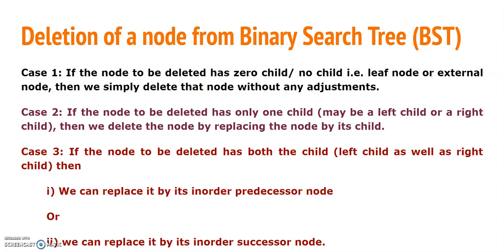We will see how to get the inorder predecessor and how to get the inorder successor. When you arrange the data in ascending order, to find the inorder successor you just take the immediate next element of that particular element. And if you want to find the inorder predecessor node, it is the immediate element before the node to be deleted.